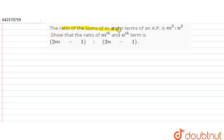Hello friends. The question is: the ratio of sum of m and n terms of an AP is m² to n². Then we have to prove that the ratio of the mth and nth term is (2m - 1) upon (2n - 1).